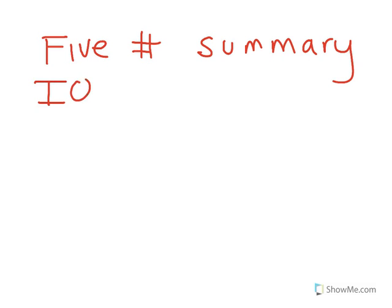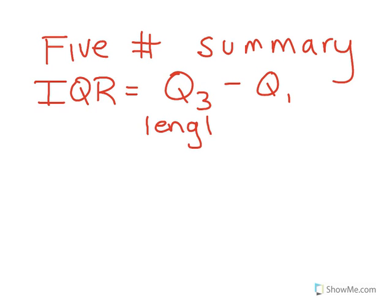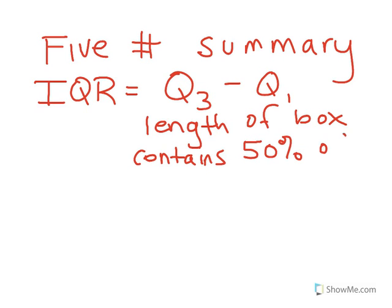Remember that the interquartile range, or IQR, is constructed by taking the difference of Q3 minus Q1. A couple of important things to remember here. A lot of you have made the connection that this distance is the length of the box in a box plot. The trickier part to really get your head around is to remember that this box contains exactly half of the data.